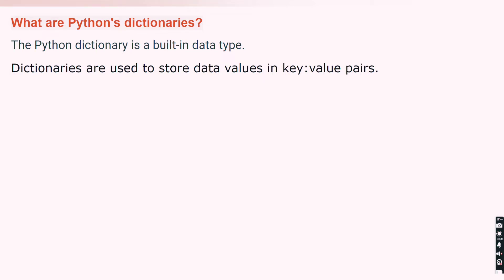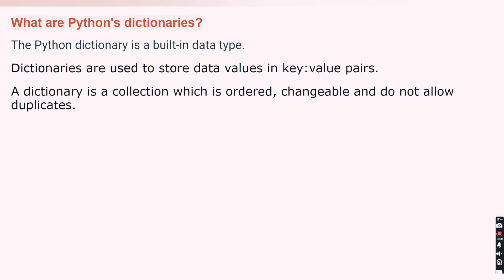To declare a dictionary you need to enclose the key-value pairs inside curly braces. The values are stored in the format of key-value pairs. The properties of a dictionary are: it is a collection which is ordered, it is changeable, and it does not allow duplicates — meaning a key cannot be duplicated inside a dictionary.